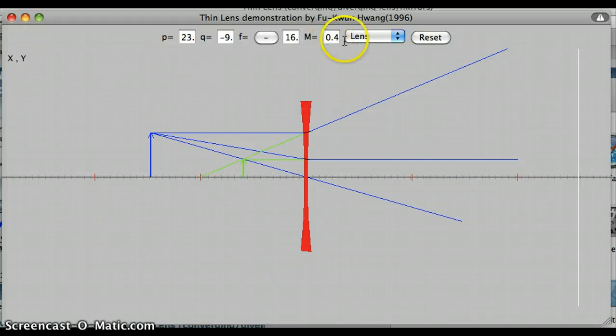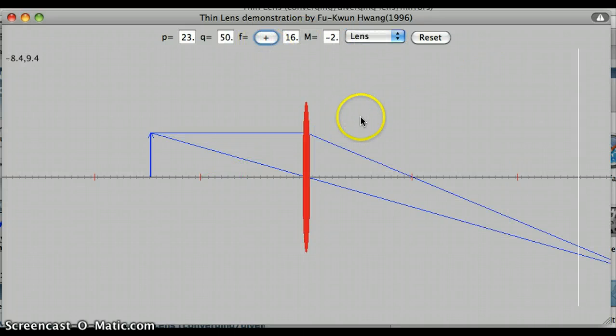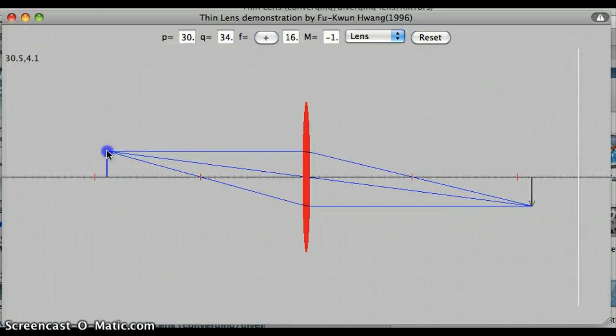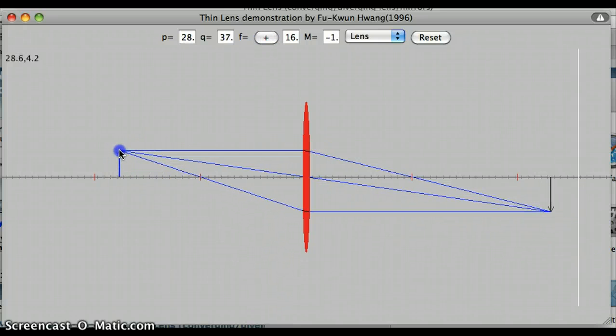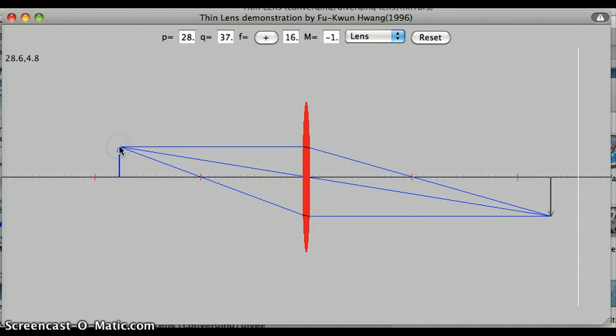Notice it is a positive magnification here. In a different situation, there is a negative magnification. So we can understand that, make the connection between the sign of the magnification and whether the image is upright or inverted.